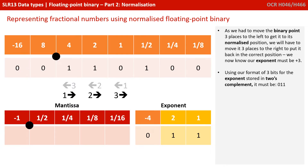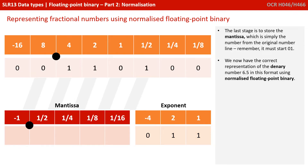As we've moved the binary point three places to the left to get it to its normalised position, we're going to have to move it three places to the right to put it back to the correct position. So we know our exponent must be positive 3 — and you've got to be careful with that in the exams. Using our format of three bits for the exponent stored in two's complement, an exponent of 3 would be 0, 1, 1 — a 2 plus a 1 is 3. The last stage is to store the mantissa, which is simply the number from the original number line, remembering it must start 0, 1.